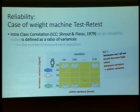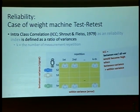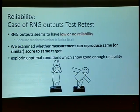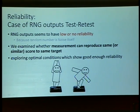So, intra-class correlation is used as a reliability index, defined as a ratio of variance. ICC is the ratio of within variance and between variance. It becomes high when between variance is greater than within variance. In the case of RNG outputs, we examined whether measurement can reproduce the same score for the same target, exploring optimal conditions which show good enough reliability.